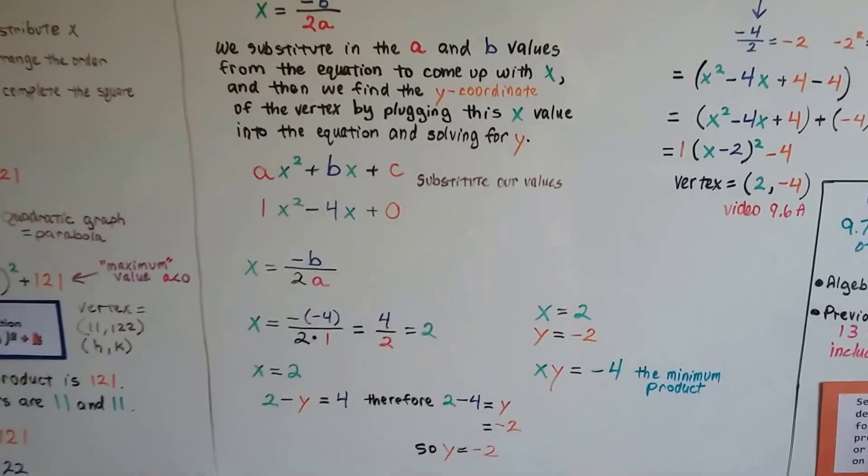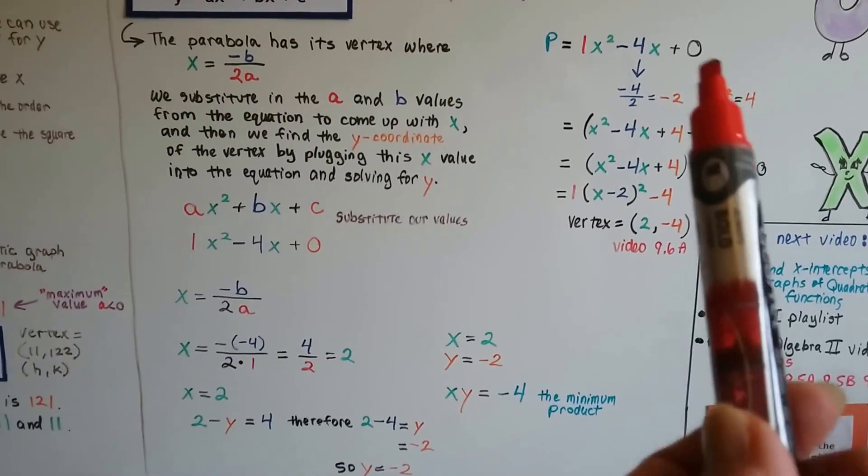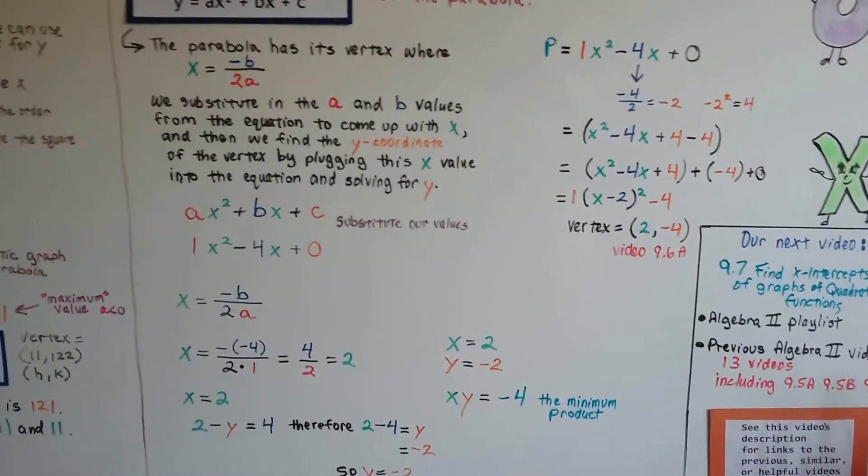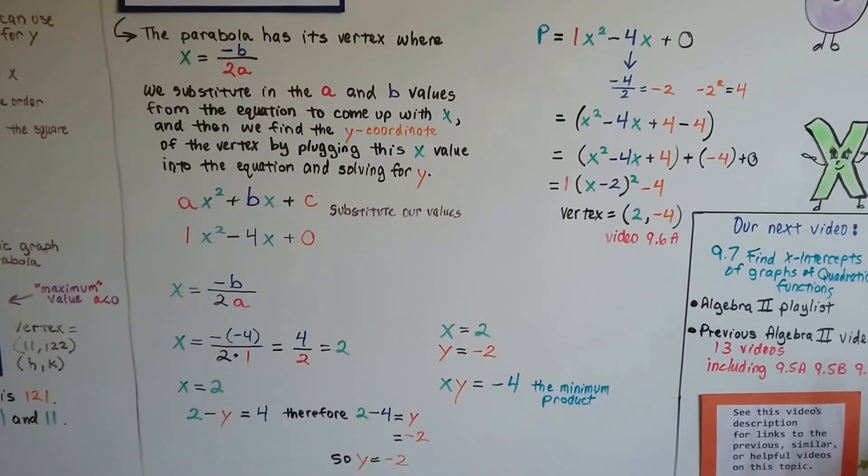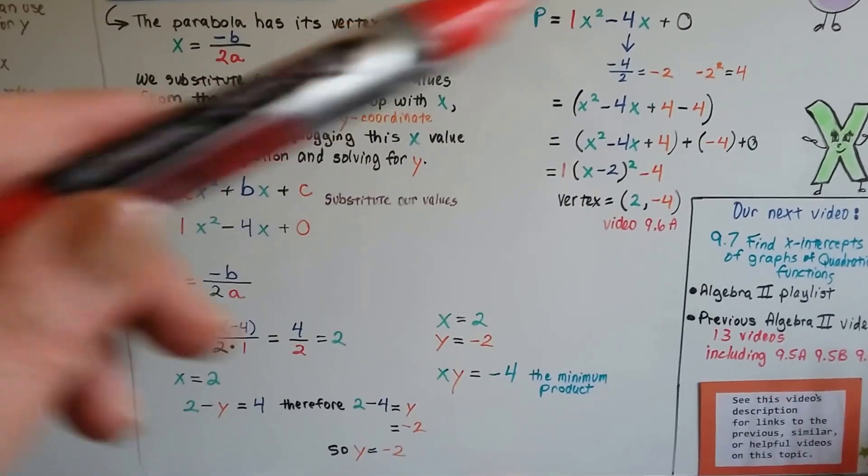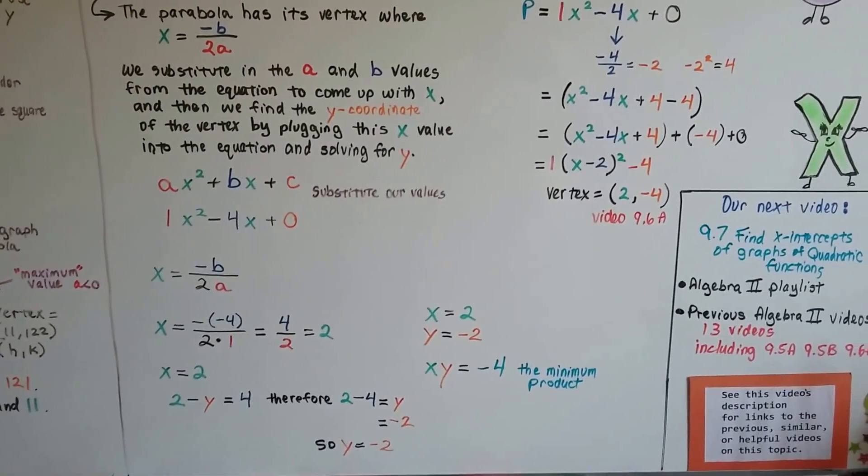You can do it one of two ways. You could do it this way, which is very popular, or you could do it the way I showed you in the previous video, 9.6a, where we complete the square and go that route to find the vertex. Either way, you're going to get the right answer.